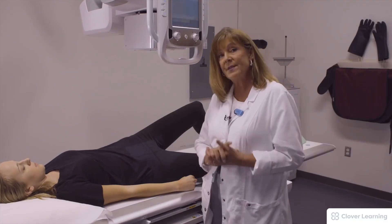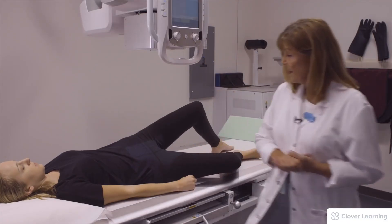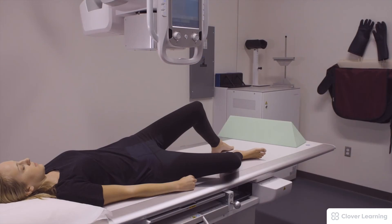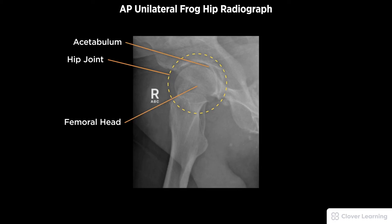The patient will suspend respiration, hold very still, and the exposure is made. A diagnostic AP unilateral frog hip radiograph must be free of motion. Demonstrated anatomy to include the hip joint, acetabulum, and femoral head with proper visualization of soft tissue and bony detail.